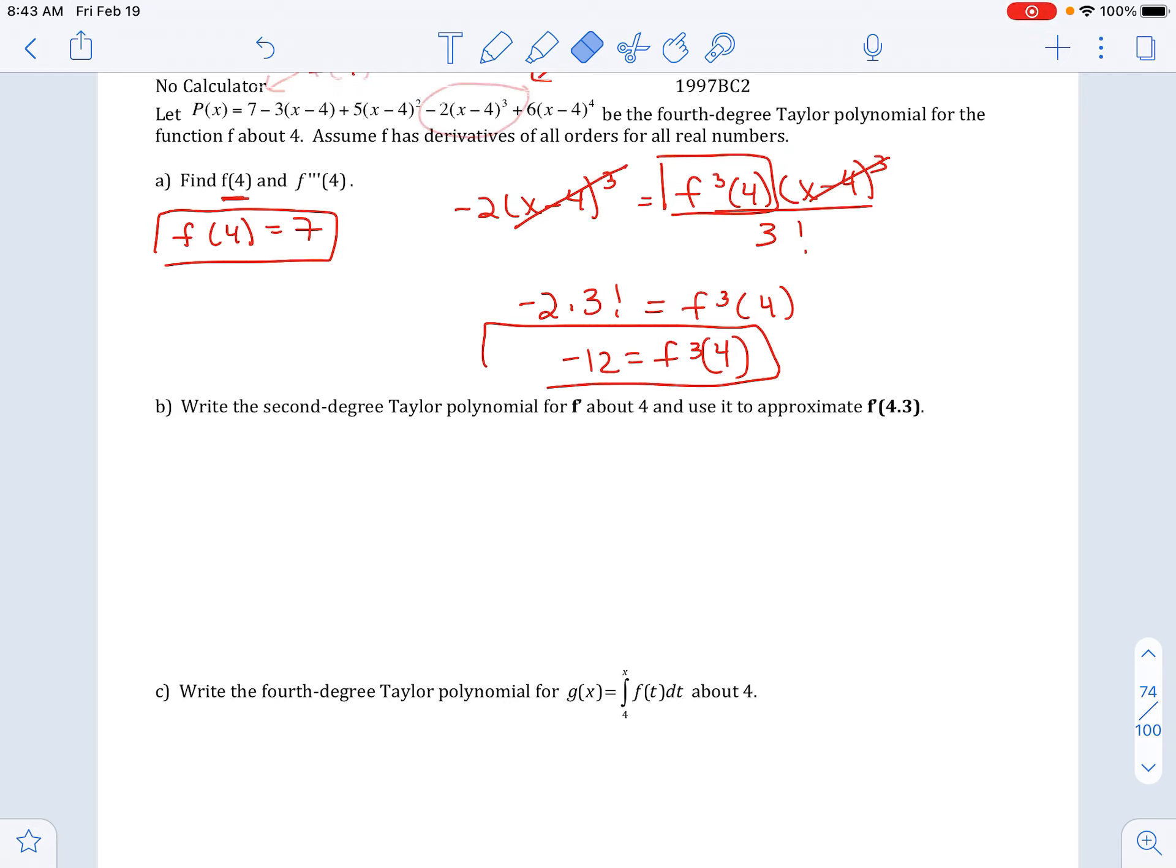Next, it says write the second degree polynomial for f prime. So remember this polynomial up here that they gave us is an approximation for f. So I'm going to find an approximation for f prime, and I'm just going to take the derivative of the polynomial.